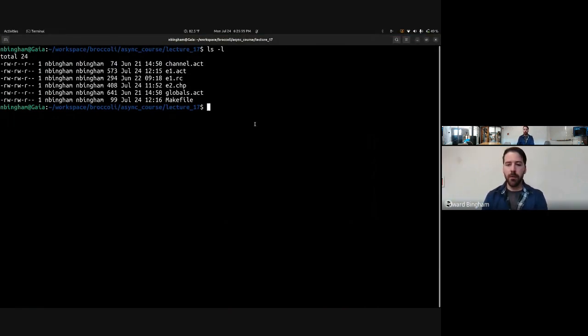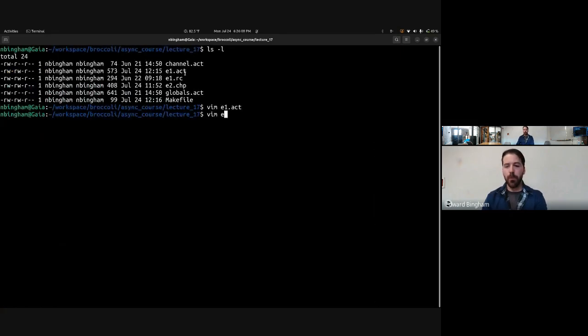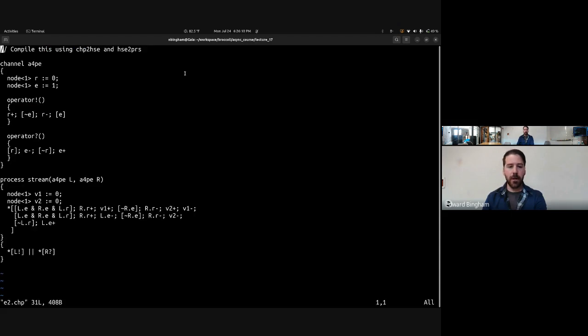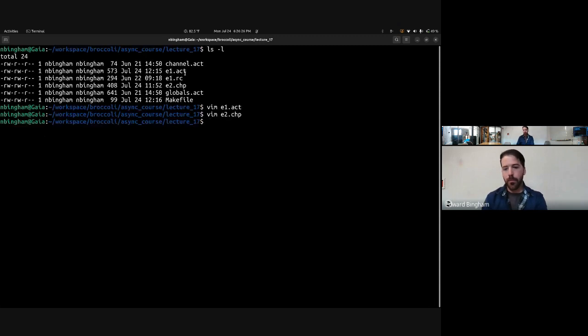Okay, okay, let's get into the examples. We have E1, in which we take our example from the lecture and we implement the set of production rules here, and we can watch it execute. And then we have E2, in which we take that CHP to HSE and HSE to PRS flow to generate the production rules in the first place. So let's walk through each of those in turn.